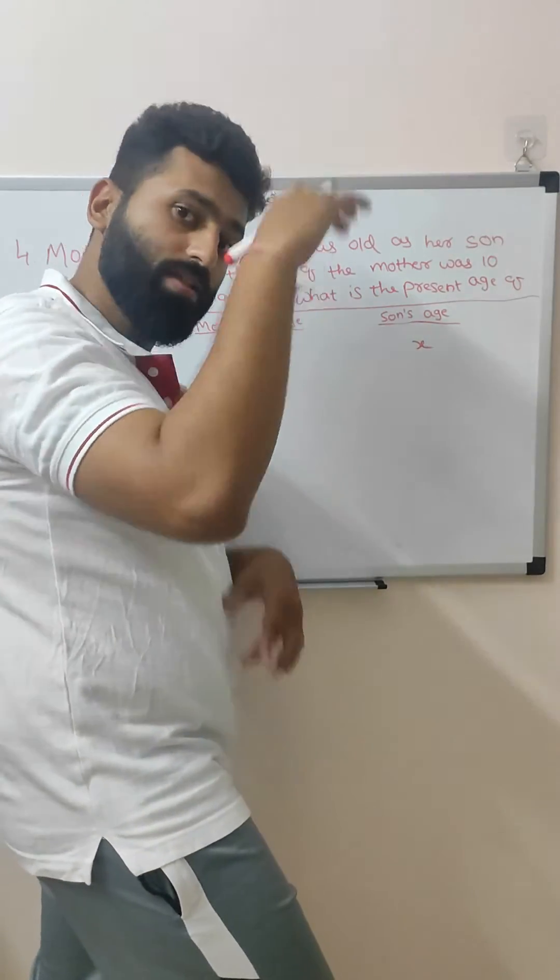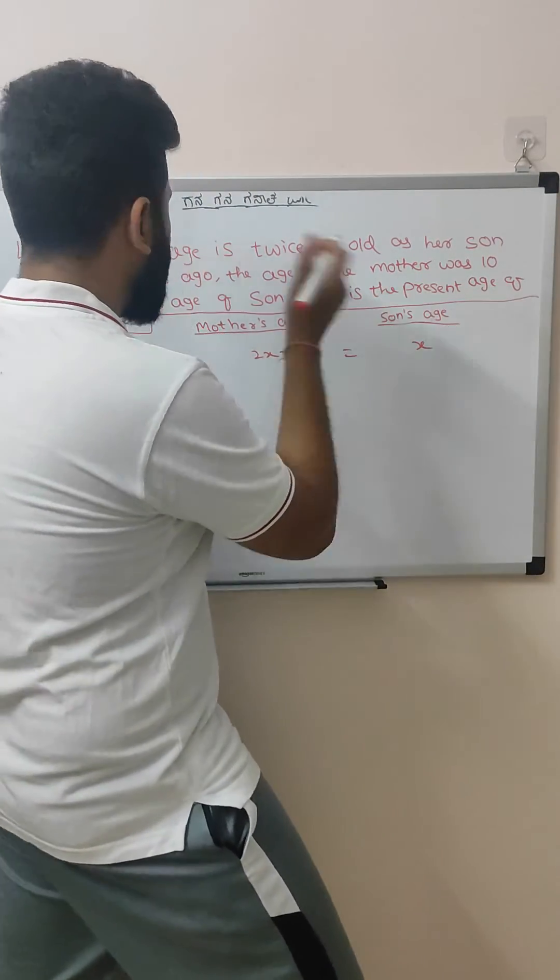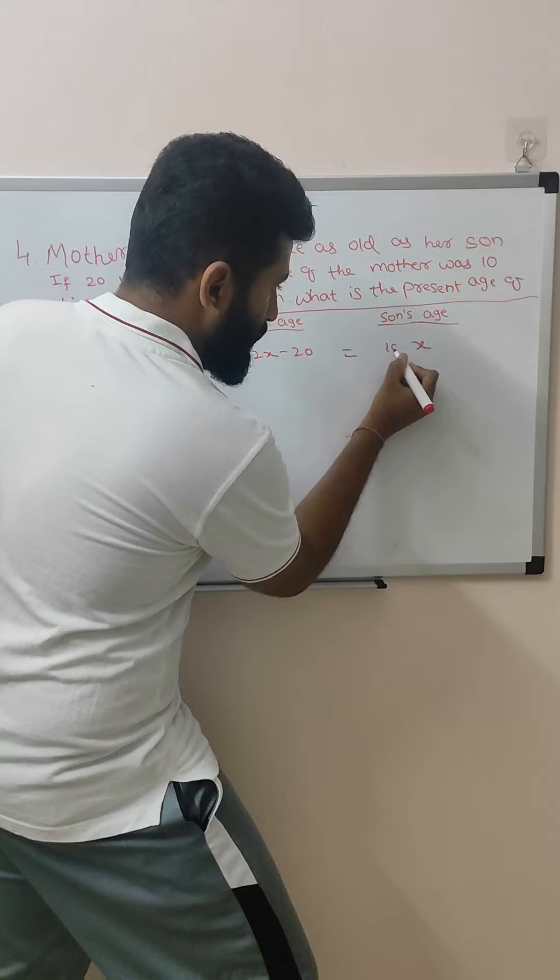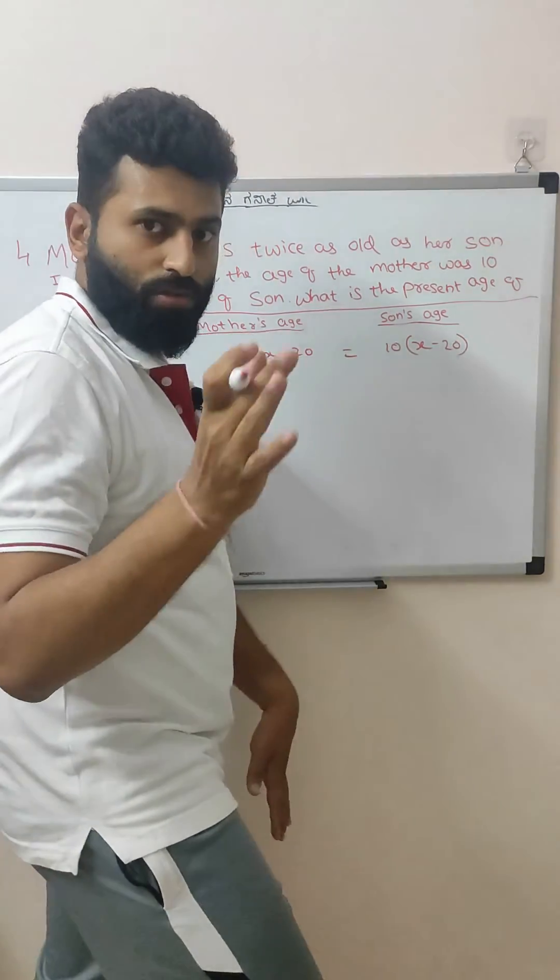The age of the mother was equal to 10 times the age of son - 10 times the age of son before 20 years. So with this equation you can solve x, right?